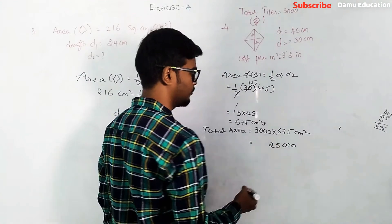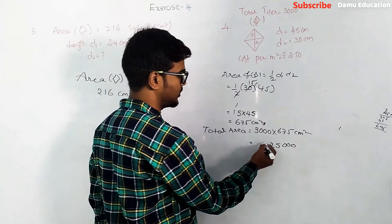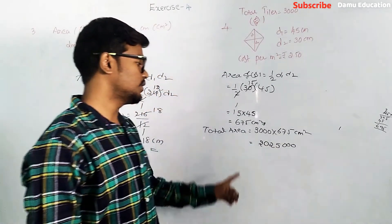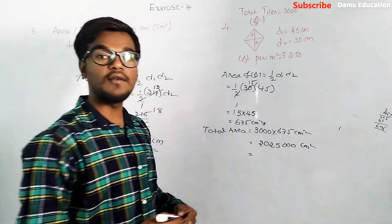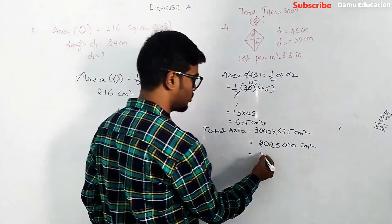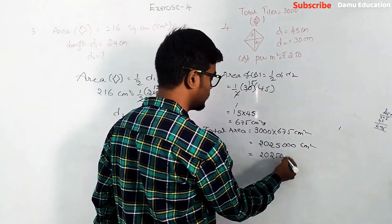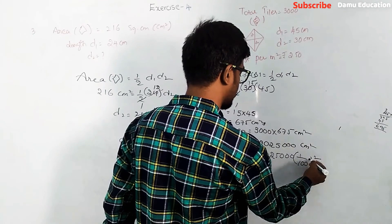The result is 2,025,000 centimeter square. So just we are going to convert this centimeter square into meter square. One centimeter will be one by hundred, so meter square is one by hundred whole square.